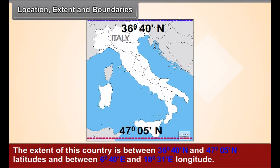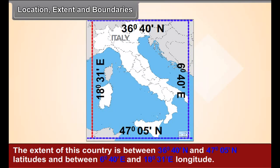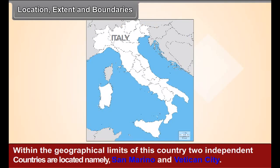and 47 degrees 5 seconds north latitudes, and between 6 degrees 40 seconds east and 18 degrees 31 seconds east longitude. Within the geographical limits of this country, two independent countries are located, namely San Marino and Vatican City. Find their locations in the map.